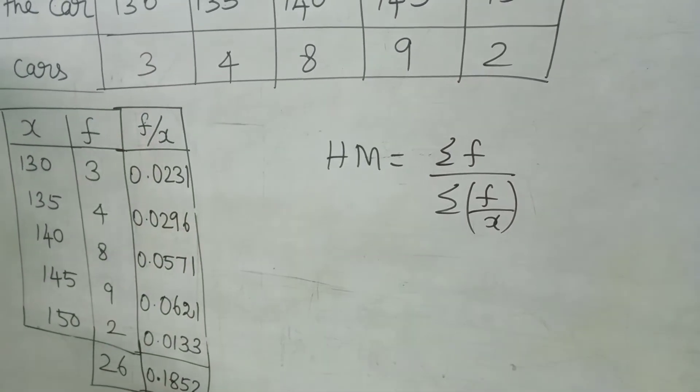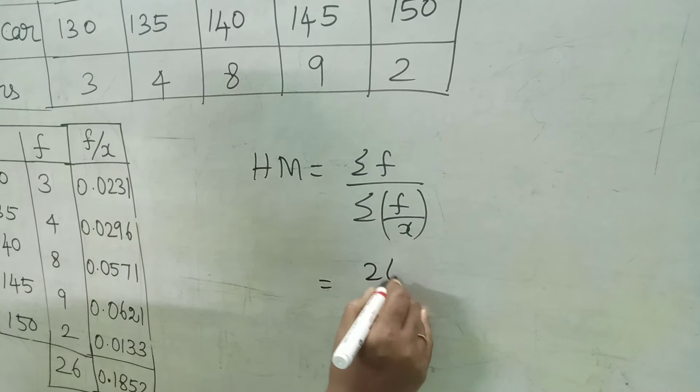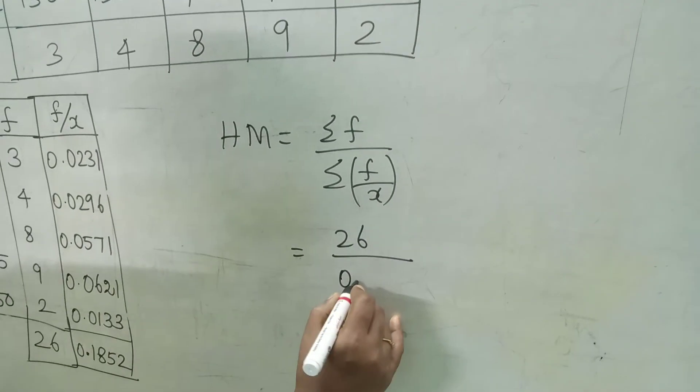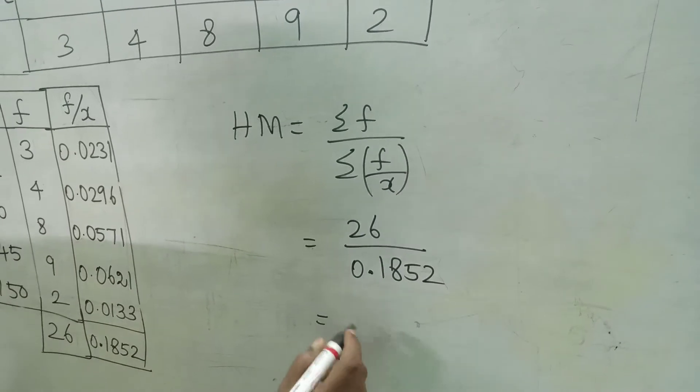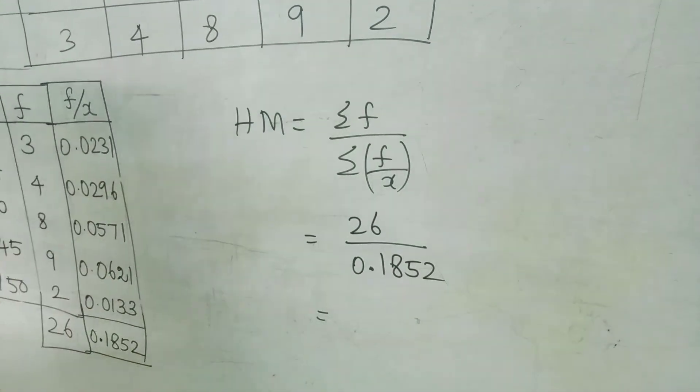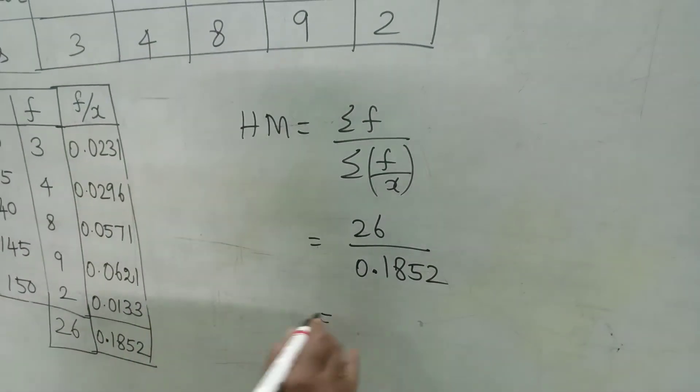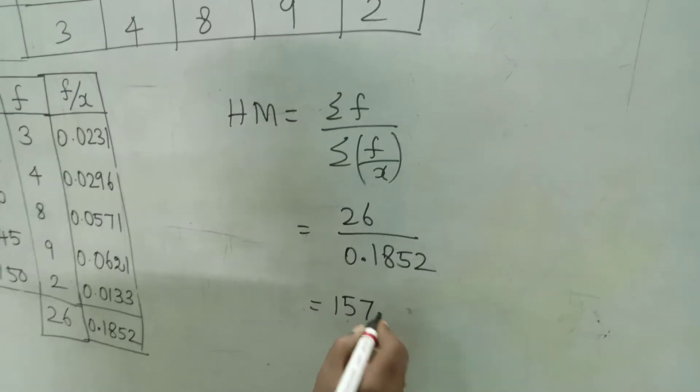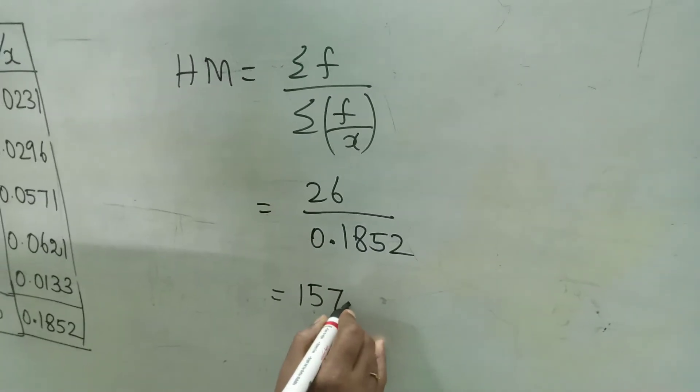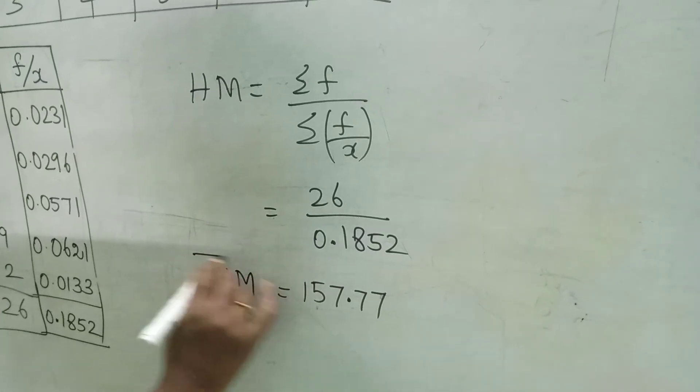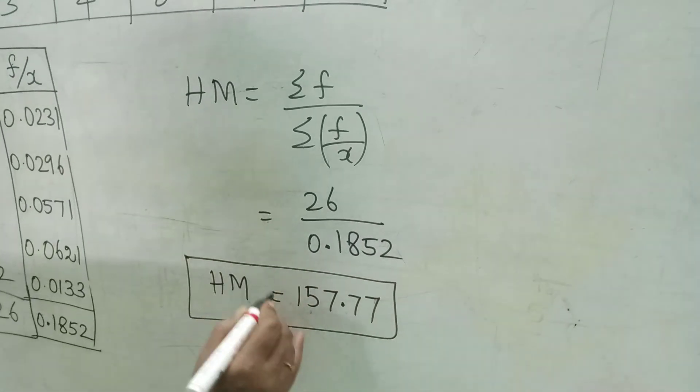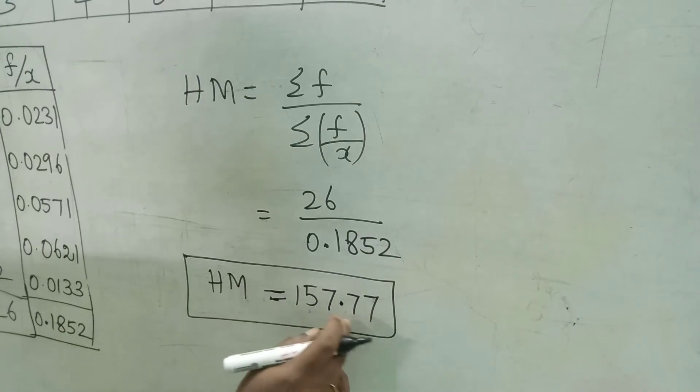Substituting these values in the formula. Sigma F value is 26. Sigma F by X is 0.1852. Dividing these two numbers with the help of calculator, we get 140.40. This is our final value of harmonic mean. Harmonic mean is equal to 140.40.